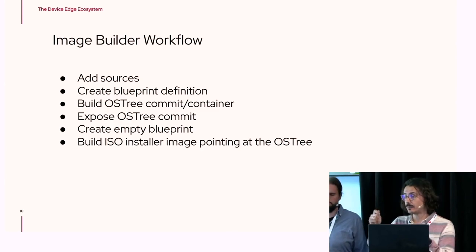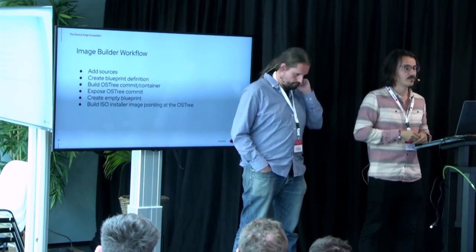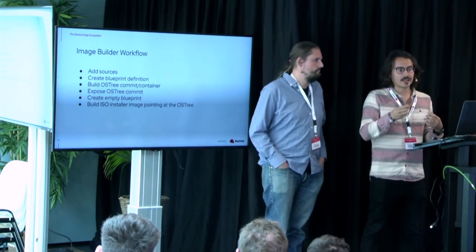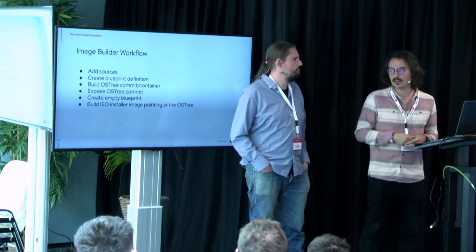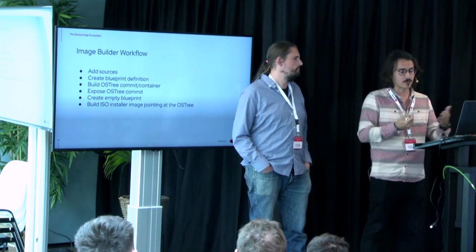A blueprint is basically a recipe for how your image is going to look — which packages, customizations, and so on. Then you build the OS tree. Once you create your OS tree containing all the packages you need for your Edge device, you expose it, and then you can do two things: use a typical RHEL ISO to point to that OS tree and install it, or create a USB installer image to plug into your devices, or build a raw disk to DD into your SD cards.